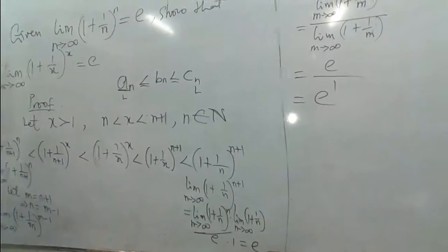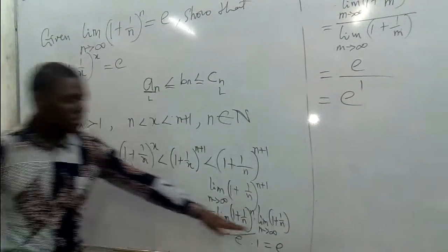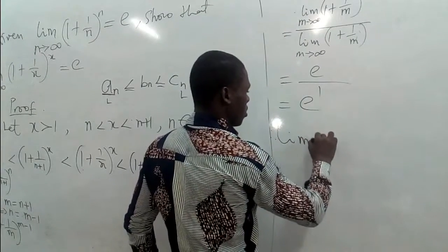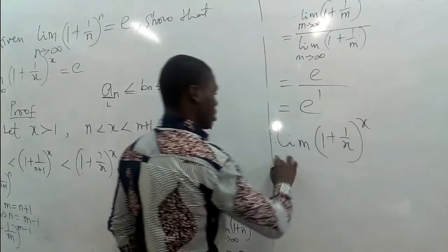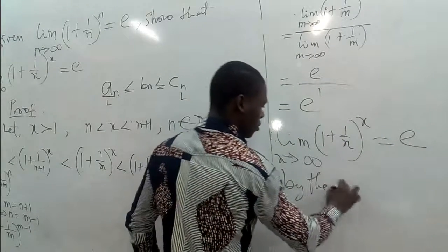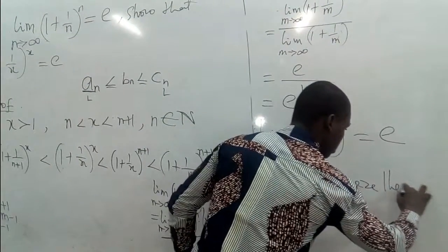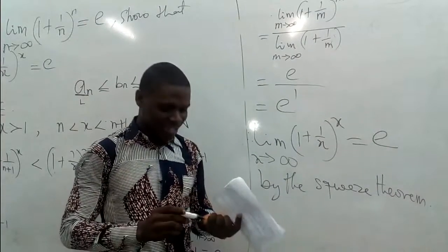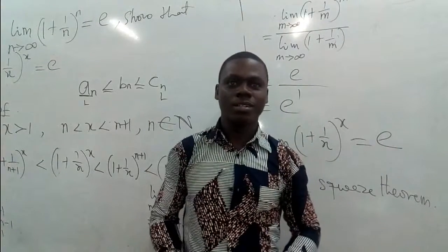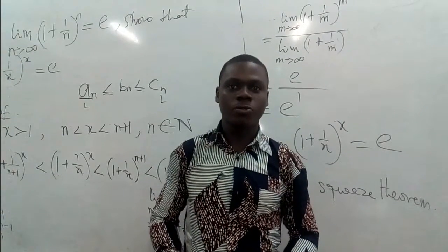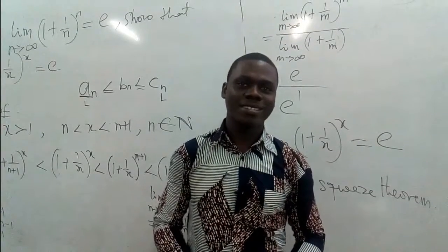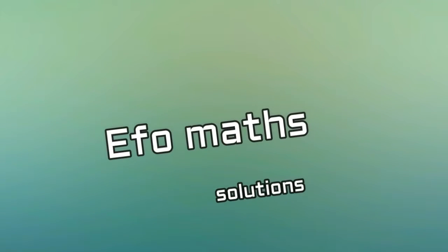By this time we should be smiling, because the left side gives e and the right side also gives e. Therefore, the limit of (1 + 1/x)^x as x approaches infinity is equal to e — by the squeeze theorem. Thanks very much for watching this particular video. Please send any questions and suggestions. Subscribe to the channel, and we will be engaging in very meaningful content. Thank you very much, and see you next time.